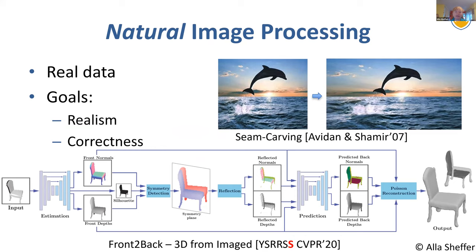And when we think about natural images, well, we have real data, right? We have photographs of real-life actions, real-life scenes. So when we create new natural images, so GAN methods and things like that, our goals are to achieve realism, to create things which look real and to achieve correctness. Because we're dealing with real data in natural imagery, we can actually measure whether what you're creating is right.